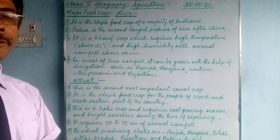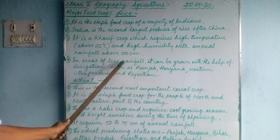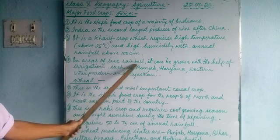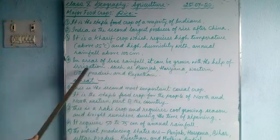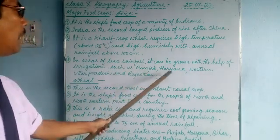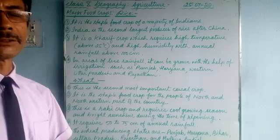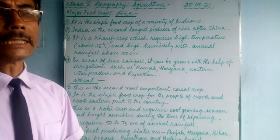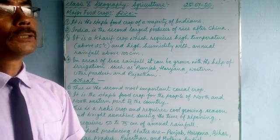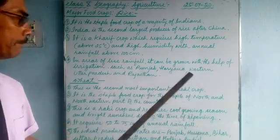In areas of less rainfall, rice can also be grown with the help of irrigation. Such areas include Punjab, Haryana, western Uttar Pradesh, and Rajasthan, where rainfall is very less. Here, irrigation facilities help the farmers to grow rice. This good quality rice is grown for commercial purposes and sold in the market for more profit.